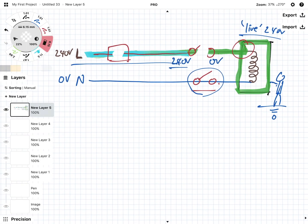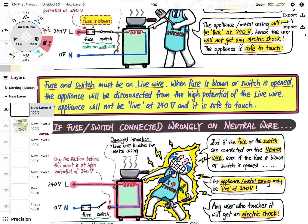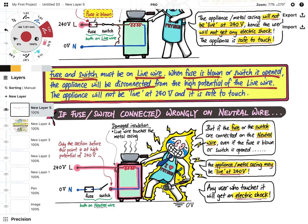If I may bring you back to the notes here, the one in the yellow box. Fuse and switch, they have to be on the live wire and the reason being because if the fuse is blown or the switch is open, the appliances will be disconnected from the high potential of the live wire. So this ensures that the appliances will not be live even if there's an electrical fault. That's the reason why.